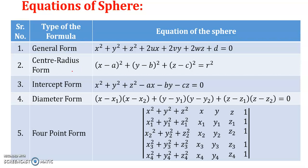The equation of a sphere in center-radius form is given by (x − a)² + (y − b)² + (z − c)² = r², where (a, b, c) are the coordinates for the center and r is the radius.